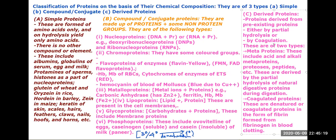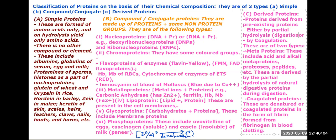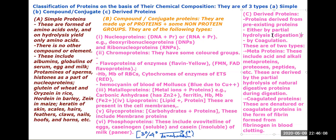Fibrinogen is a functional protein and fibrin is a derived protein — this is called coagulation of blood. Similarly, when you eat mutton, trypsin, pepsin, and other enzymes act on it — this is called partial hydrolysis, also known as digestion. So derived proteins arise either by partial hydrolysis or by coagulation.